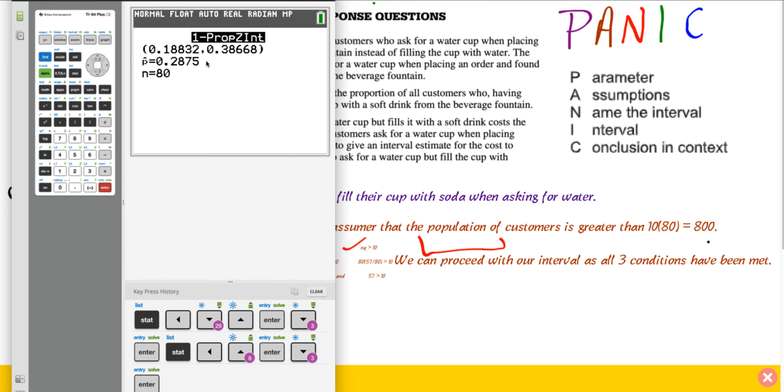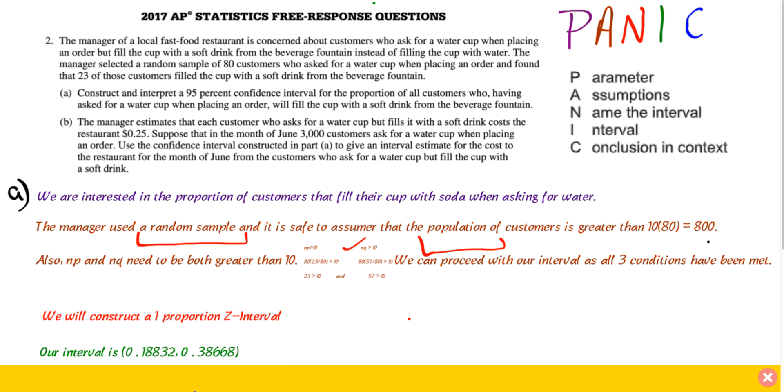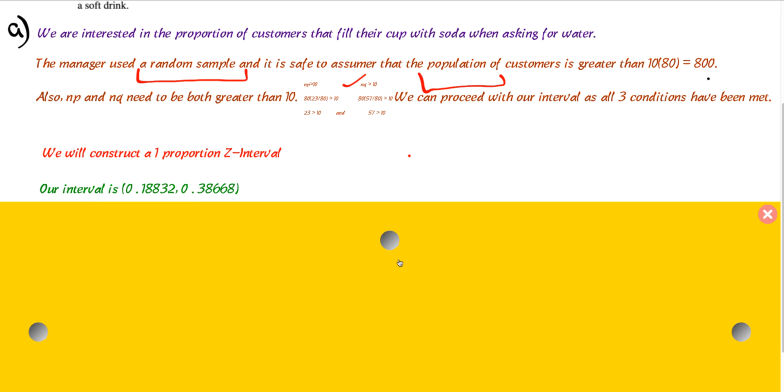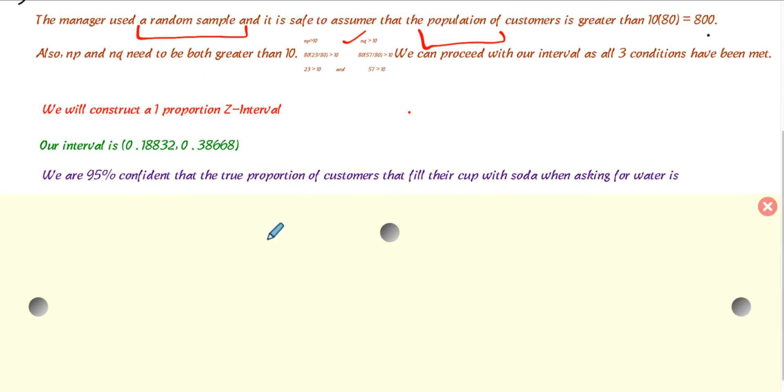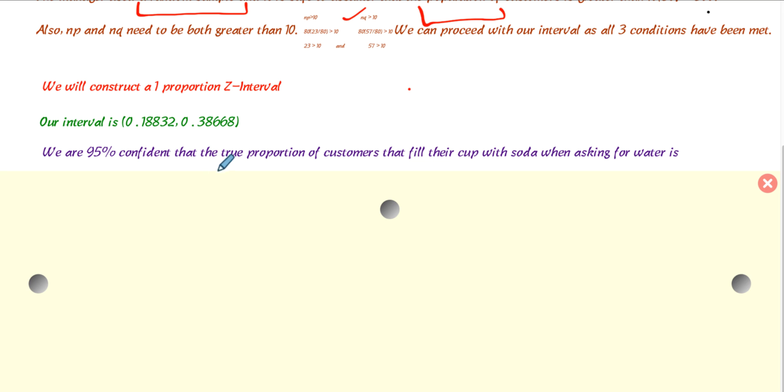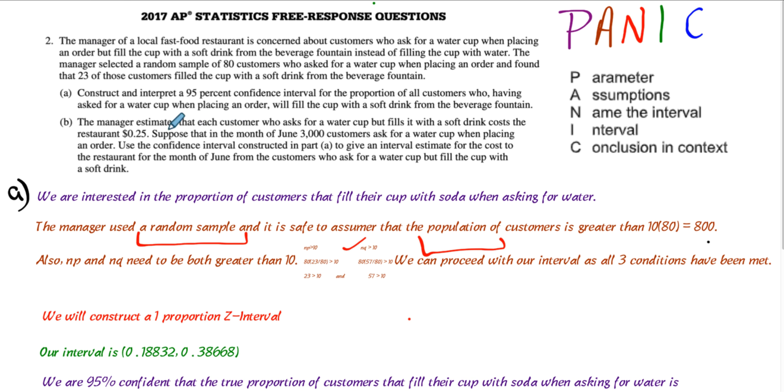They tell you P hat, which is our sample proportion, and they tell you the sample size as well. So, our interval is 0.188 to 0.387, if we're rounding correctly. So, now we just need to make a conclusion in context. We are 95% confident that the true proportion of customers that fill their cup with soda when they ask for water is between 18.8% and 38.7% if you round it correctly. So, that satisfies part A of this question. That's how you construct a confidence interval.